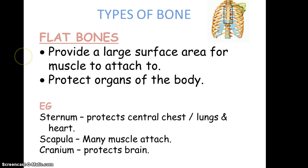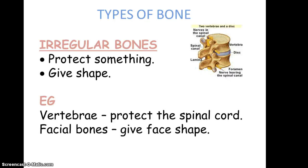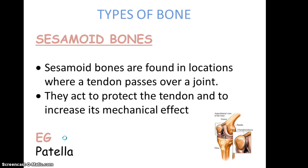Flat bones provide a large surface area for protection — examples include the sternum, scapula, and cranium. Irregular bones include those of the vertebral column and facial bones. There is also the sesamoid bone — these are found in locations where tendons pass over a joint, acting to protect the tendon or increase its mechanical efficiency. An excellent example is the patella, or kneecap — from now on we'll use the technical term: the patella is a sesamoid bone.